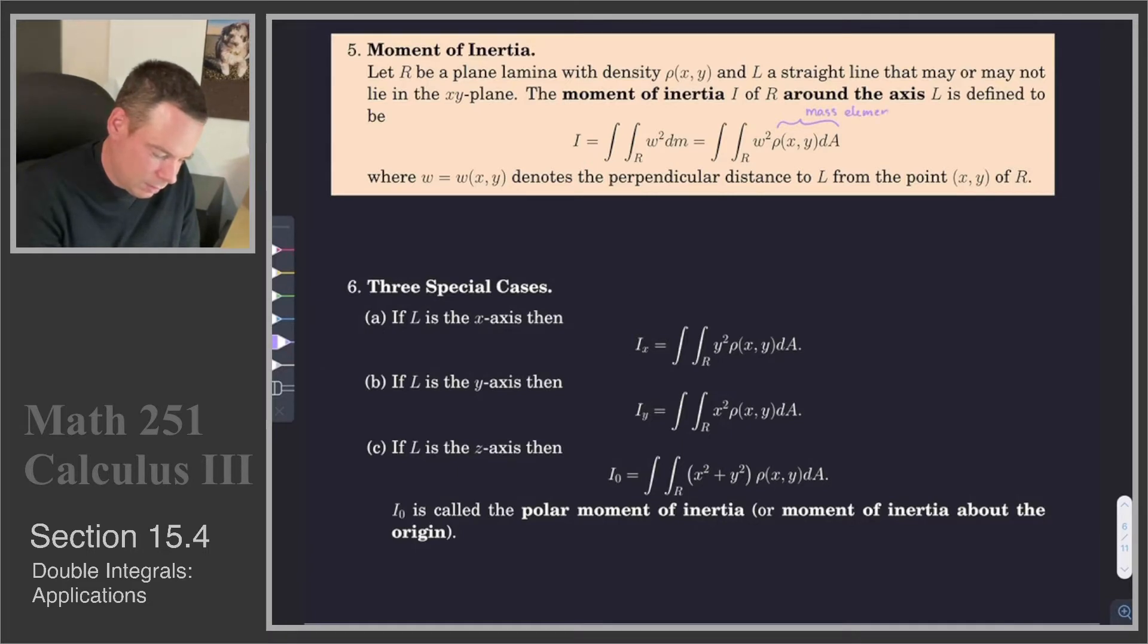It is density times area, so this is our mass element. So you think of this as a little tiny speck on that lamina, and the mass of that tiny little speck. And then we are multiplying by W squared, so the square of its distance to the axis of rotation, and then we are integrating over this.